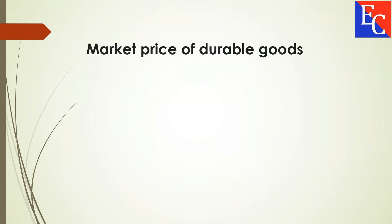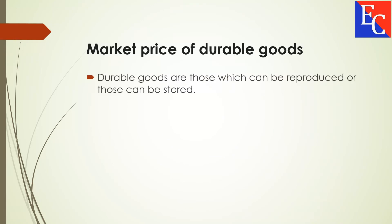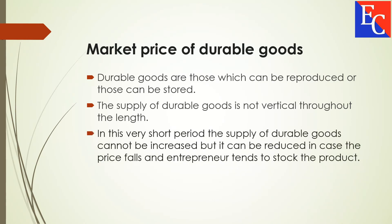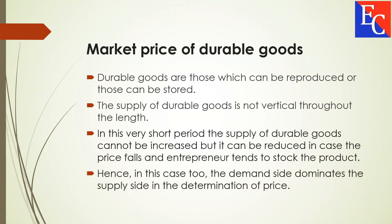Market Price of Durable Goods. Durable goods are those which can be reproduced or stored. The supply of durable goods is not vertical throughout its length. In this very short period, the supply of durable goods cannot be increased, but it can be reduced. In this case, the price falls and entrepreneurs tend to stock the product. Hence, the demand side dominates the supply side in the determination of price.